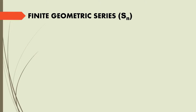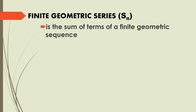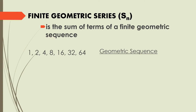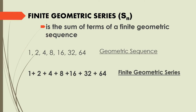Finite Geometric Series is denoted by S sub n. The concept is almost the same as Finite Arithmetic Series, except this time we have a geometric sequence. By definition, a Finite Geometric Series is the sum of terms of a Finite Geometric Sequence. For example: 1, 2, 4, 8, 16, 32, and 64 is a Finite Geometric Sequence. When you add those terms — 1 plus 2 plus 4 plus 8 plus 16 plus 32 plus 64 — you have a Finite Geometric Series.